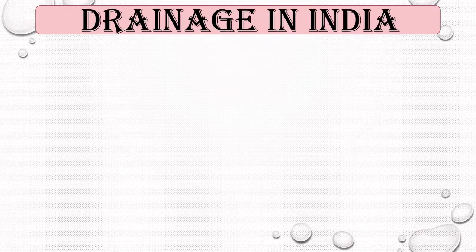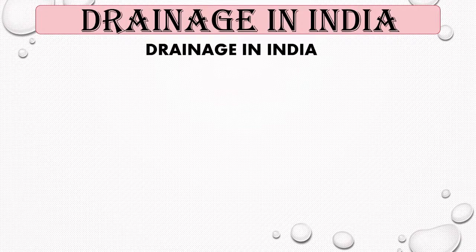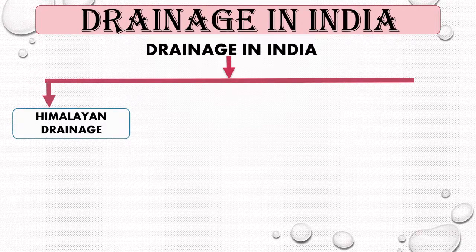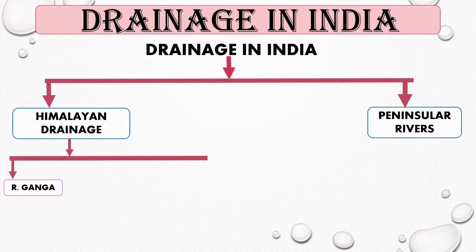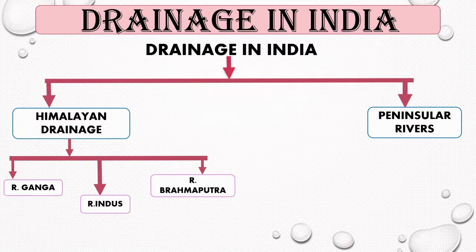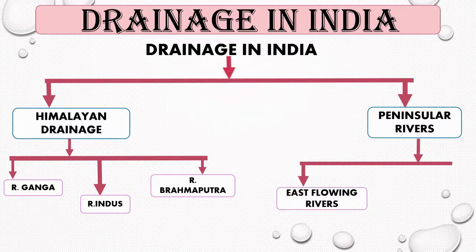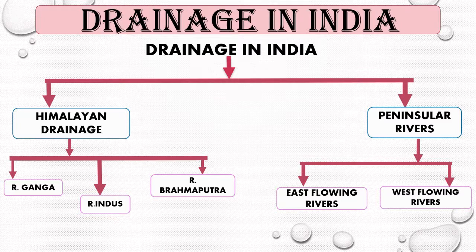The drainage system in India is classified into the Himalayan Drainage System and the Peninsular rivers. The Himalayan Drainage System includes the river Ganga, the river Indus, and the river Brahmaputra Basin. The peninsular rivers are divided into east flowing rivers and west flowing rivers, including Narmada, Tapi, Mahanadi, Godavari, Krishna, and Kaveri. All the rivers in India form a river system known as the Drainage System of India. Let's learn about the different rivers and river systems that together form the drainage system of our country.